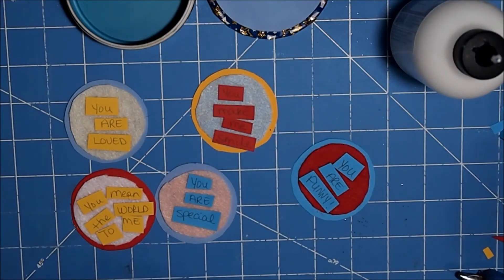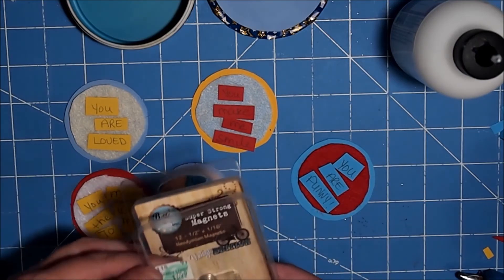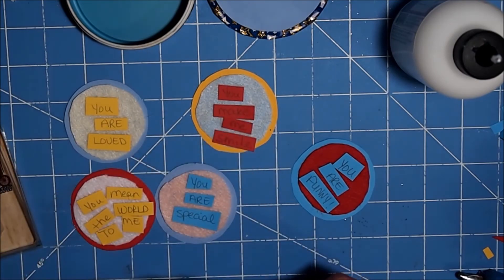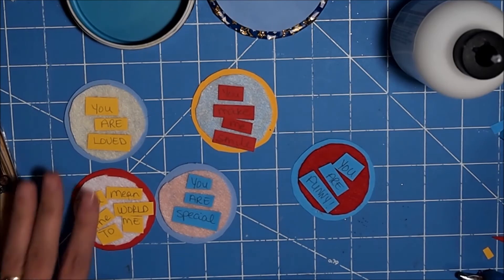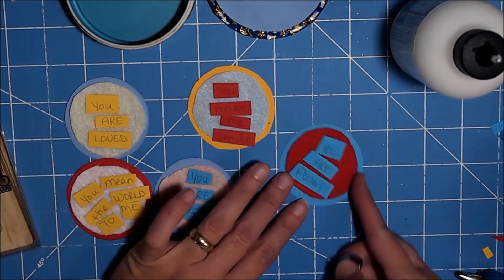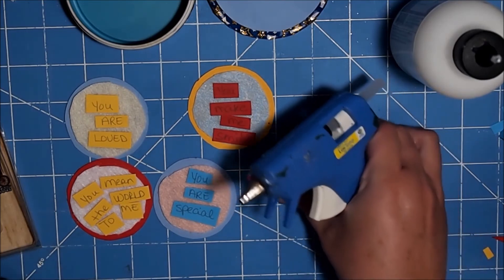I got those done, and now I am just going to stick a magnet on the back. I'm using these super strong magnets that I picked up at Hobby Lobby a few years ago, and I'm just going to hot glue them to the back. I went with 'you are loved,' 'you mean the world to me,' 'you are special,' 'you make me smile,' and 'you are funny.' I think that this is just a fun gift. It's something that they can put on their refrigerator and have all year for many years.